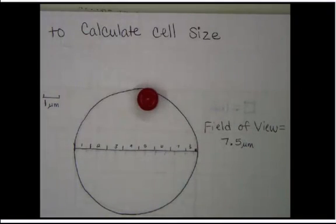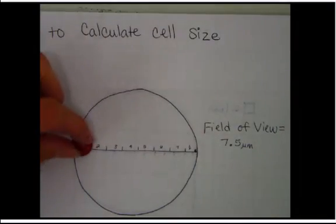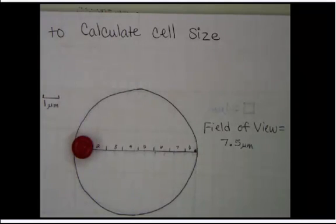From the field of view, now I need to figure out how big my cell is. So I need to line my cells up across the diameter. But I only have one. So there's two ways to do this.